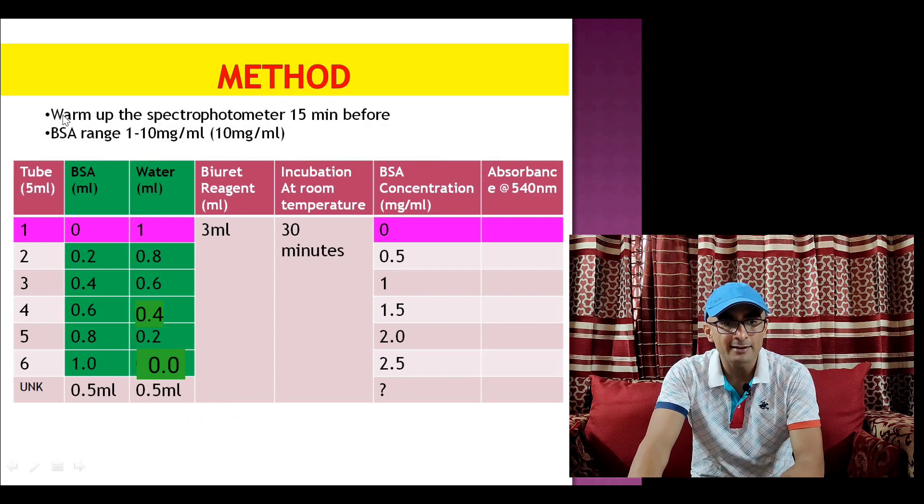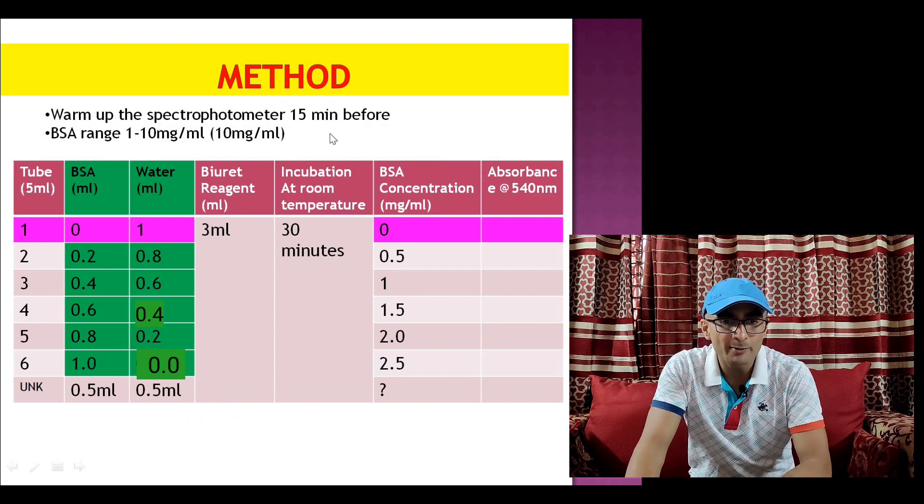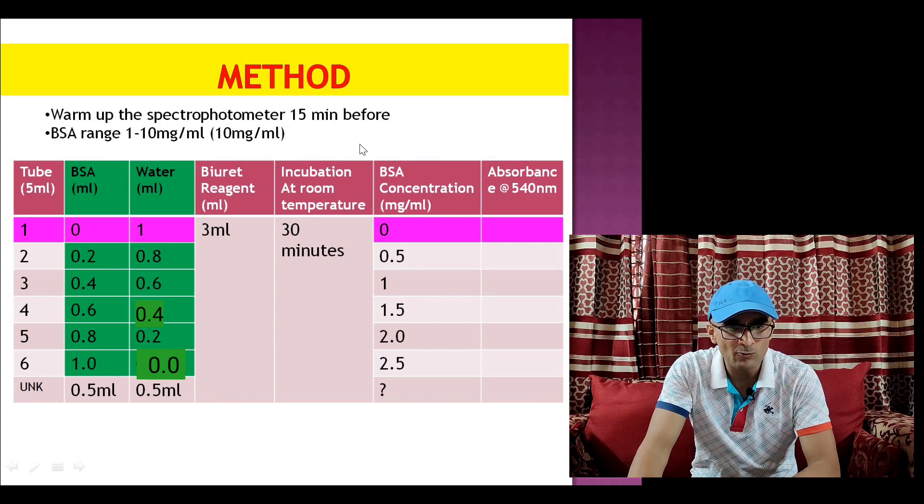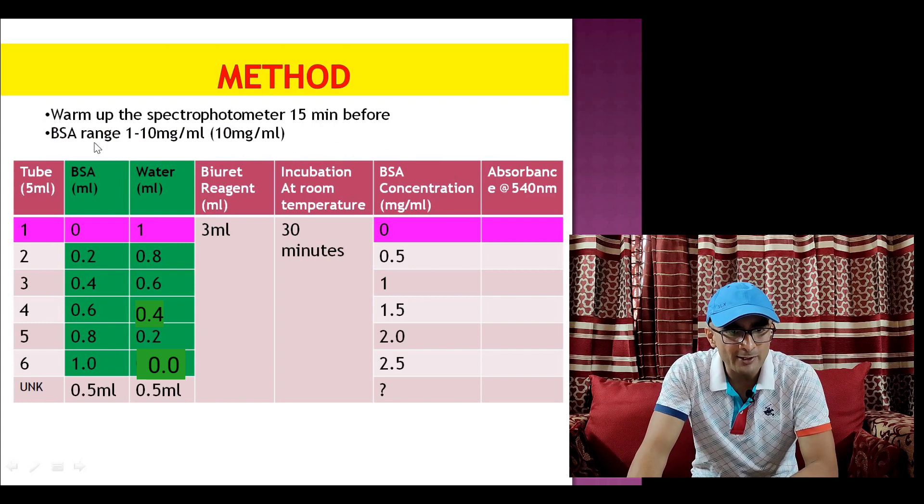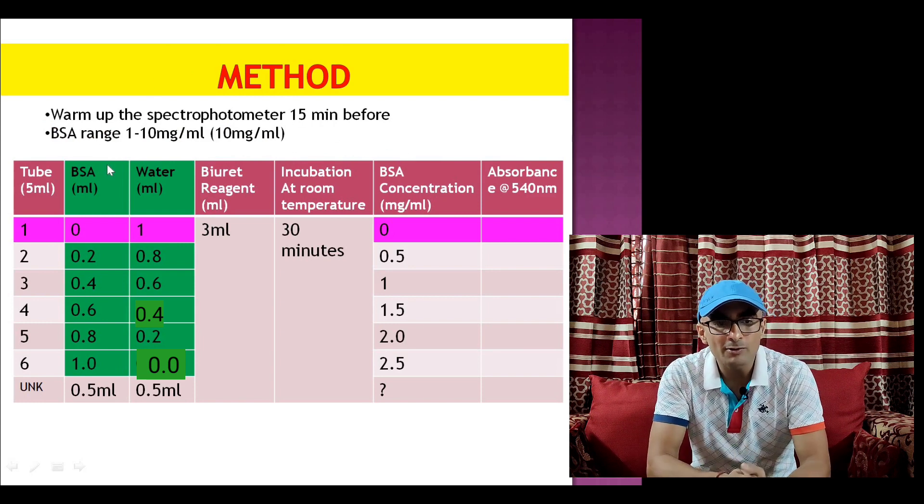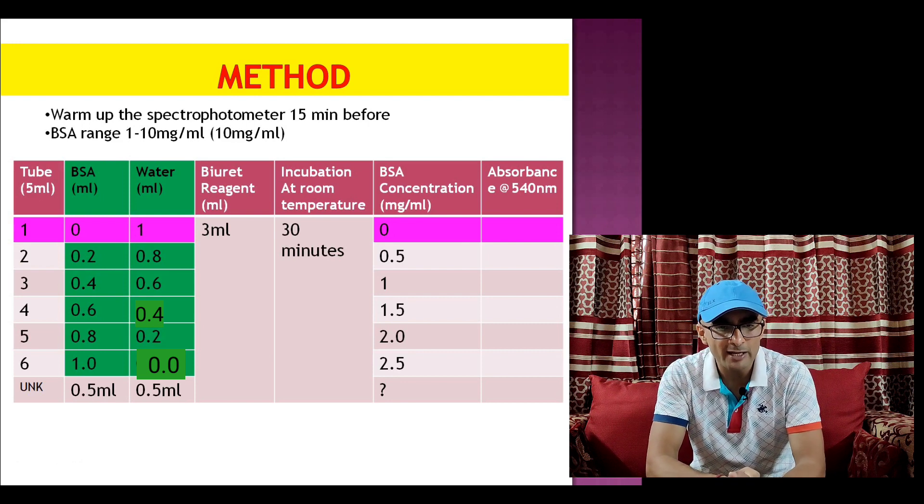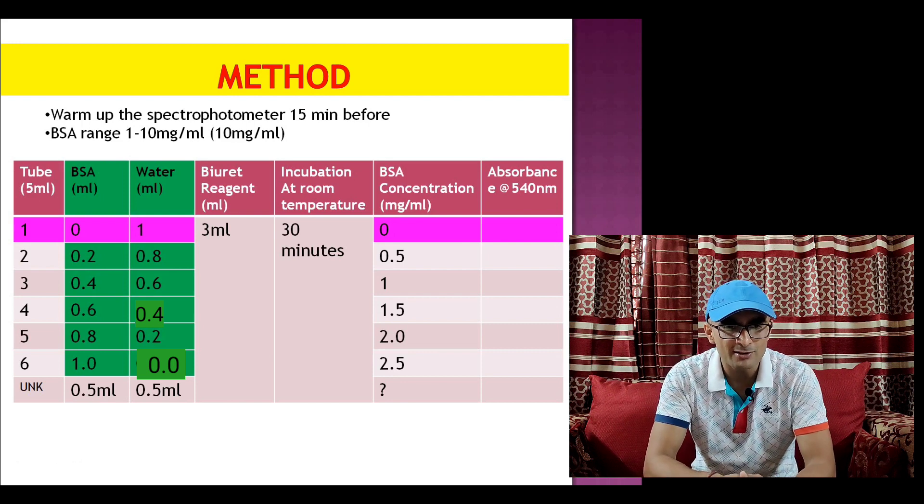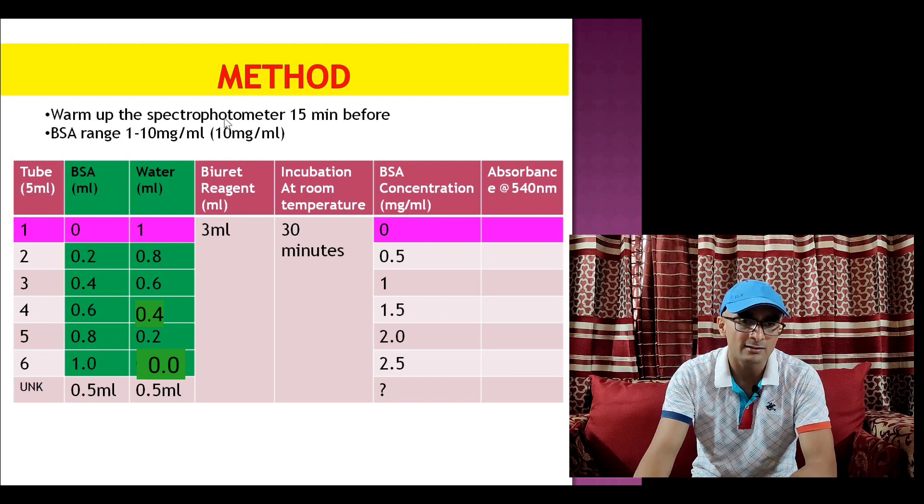In the method we need to start spectrophotometer 15 minutes before so it gets warmed up, and meanwhile standard curve is prepared using bovine serum albumin, a very common protein which is very often used to make a standard curve.